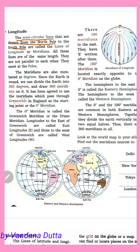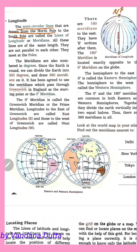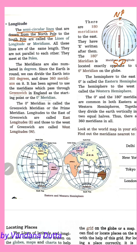We have told you that the upper point is called the North Pole and the lower point is called the South Pole. These lines are of the same length.